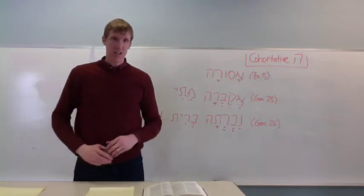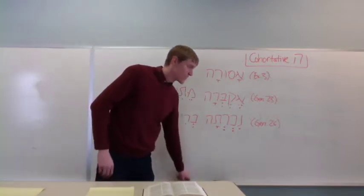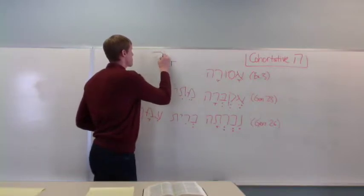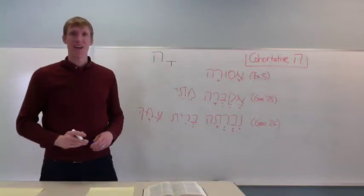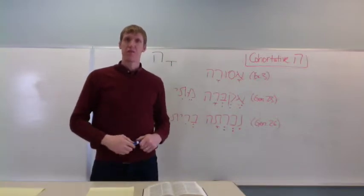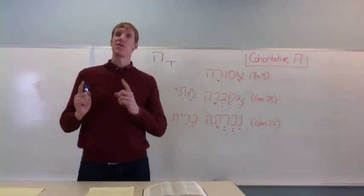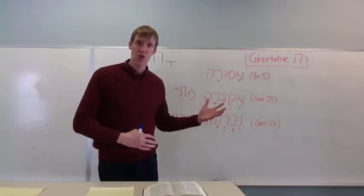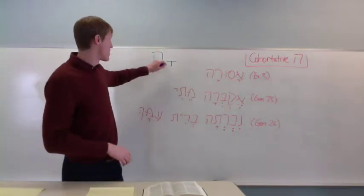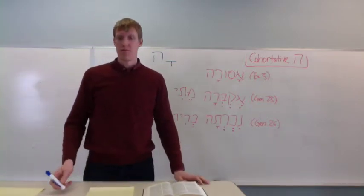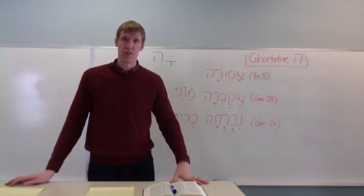The sign of the cohortative is the comet's HE. Comet's HE on the very end of a verb. A first-person imperfect. If you have a cohortative HE, the comet's HE on the end, then that's what you're dealing with. You're dealing with a cohortative.